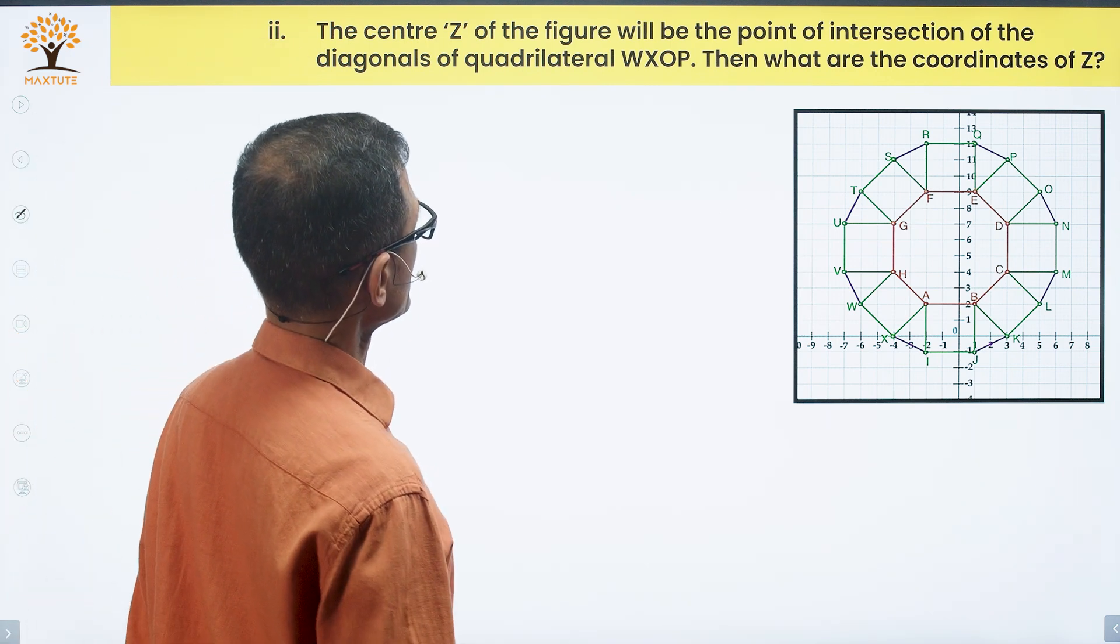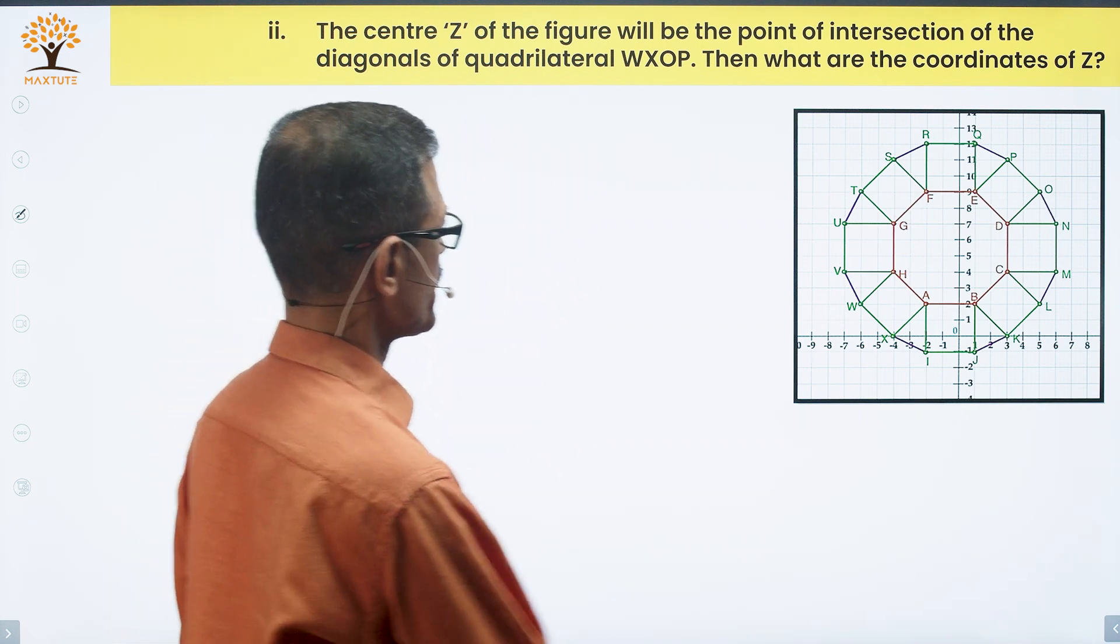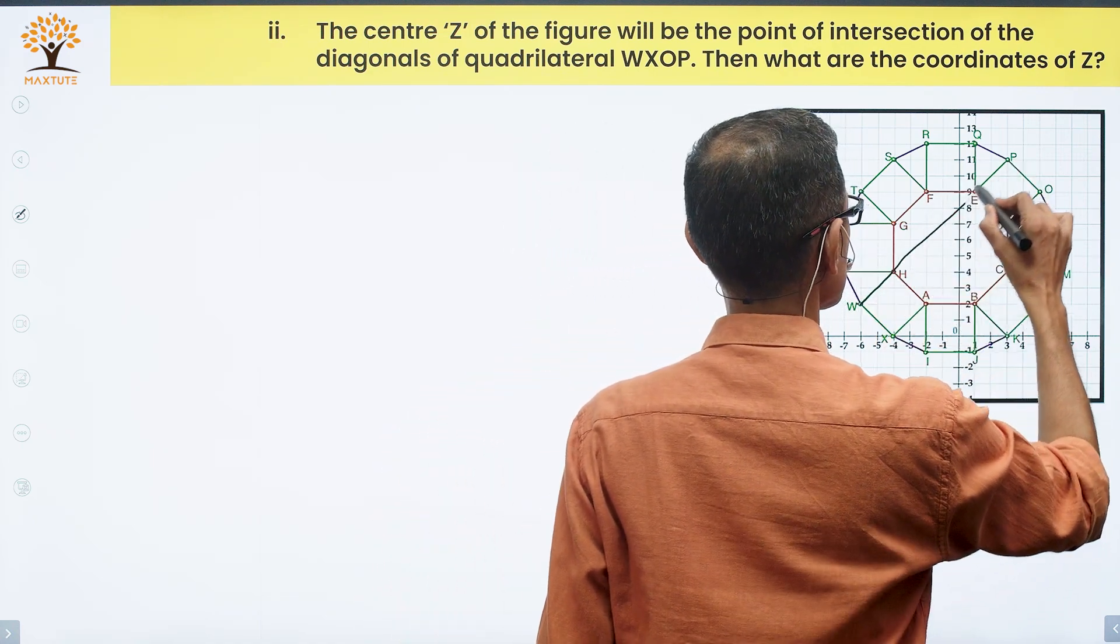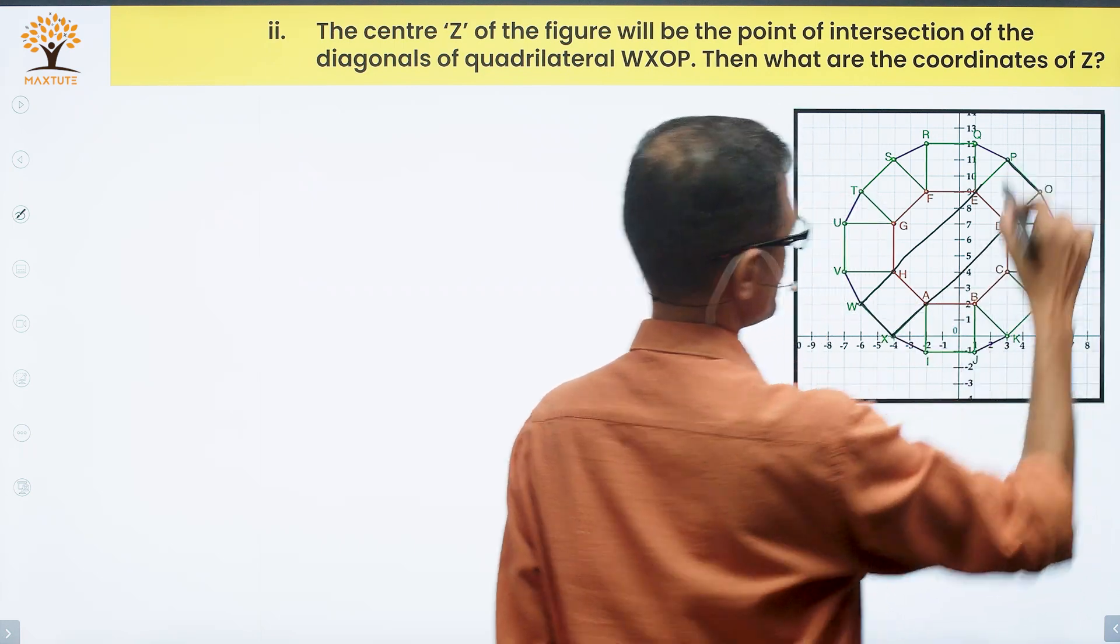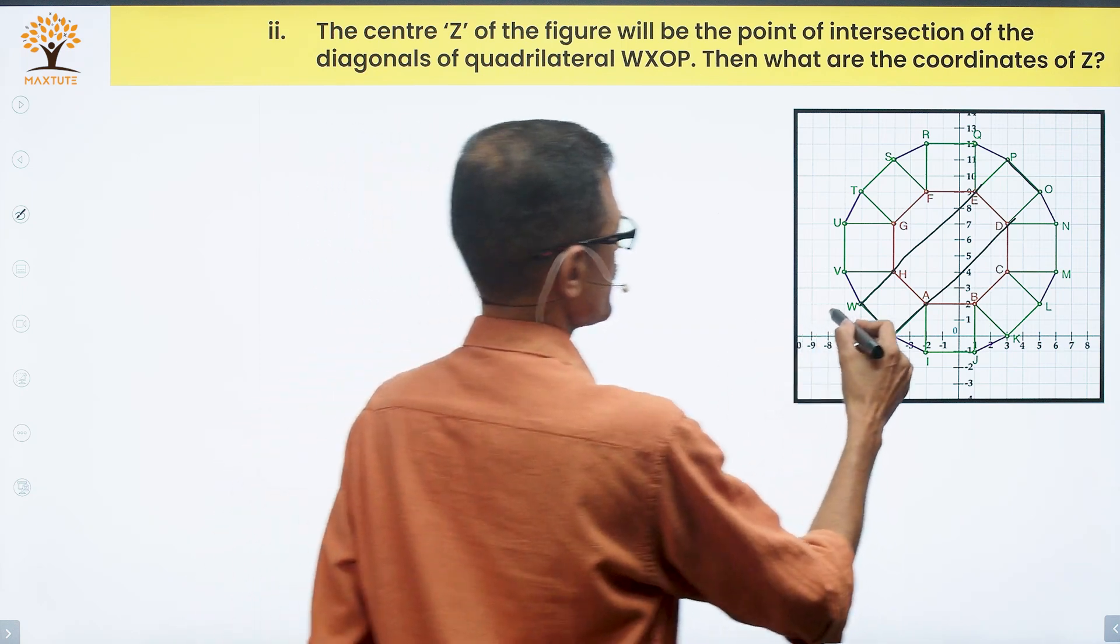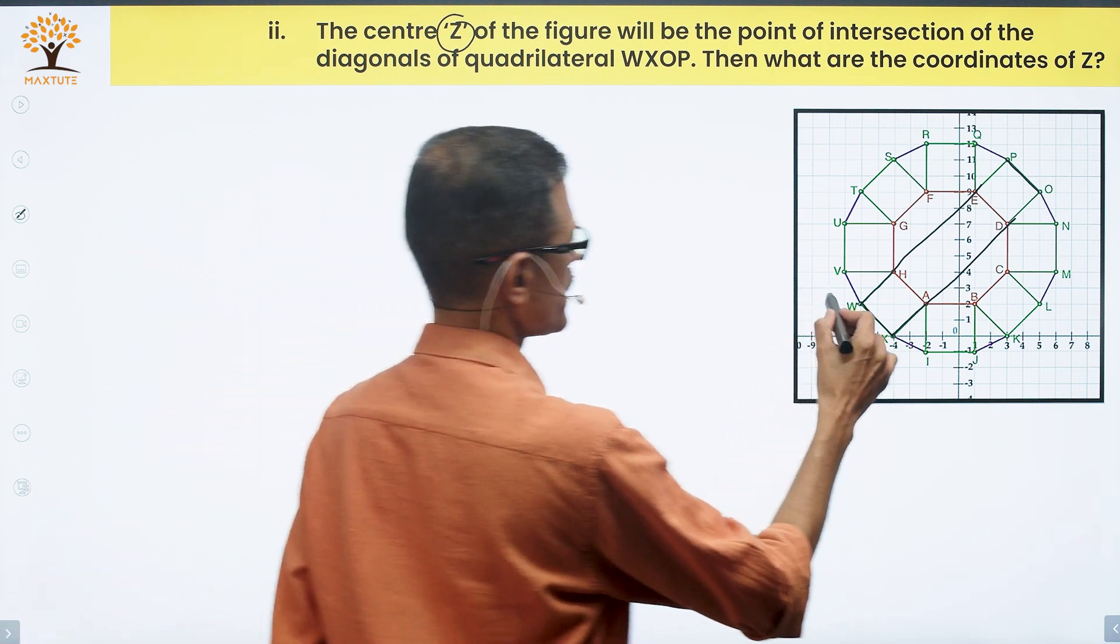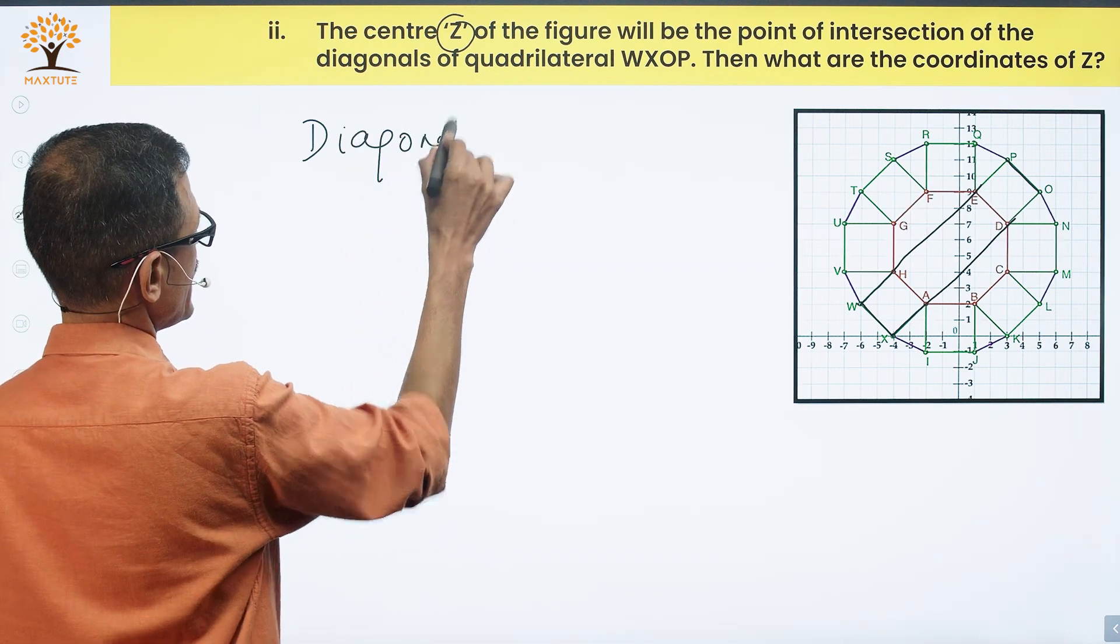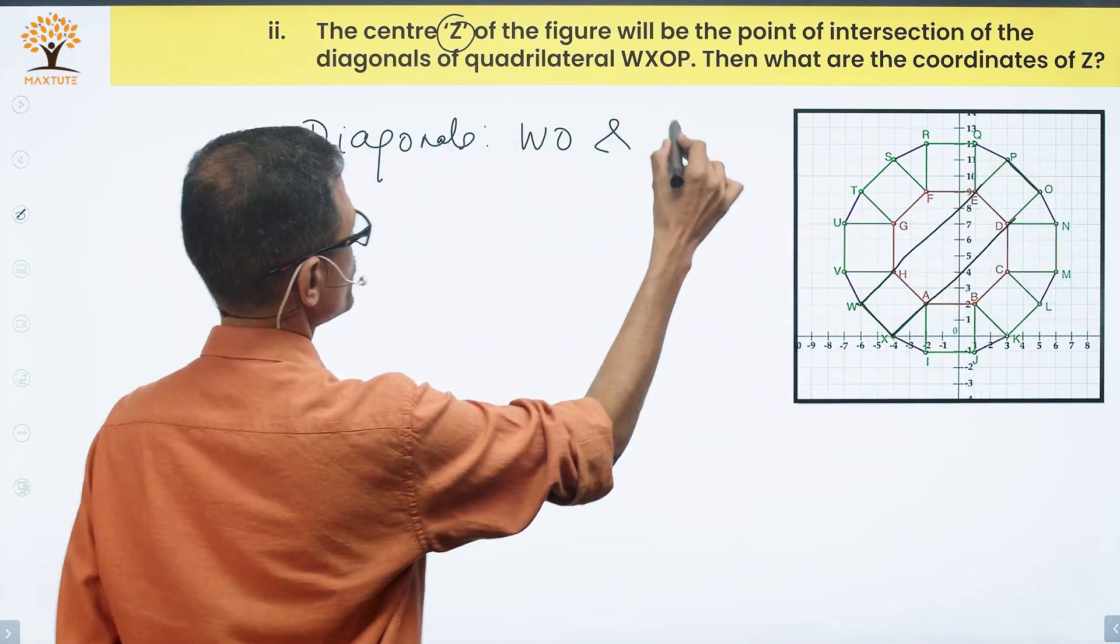Moving on to part 2. The center Z of the figure will be the point of intersection of the diagonals of the quadrilateral WXOP. Let's join this - WXOP. What we get in this shape is essentially a rectangle.